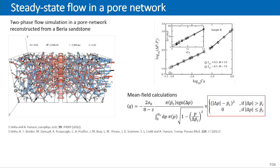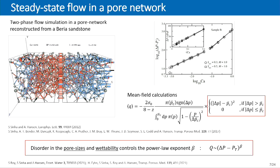At high pressure drops things go linear. We also explored uniform distributions and different distributions of capillary properties and pore-network properties such as pore radii and pore size distributions. The results show that both the pore size distribution and the capillary threshold distribution control the power-law exponent beta.